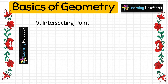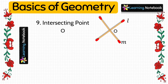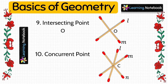Next we have intersecting point, which we just learnt while understanding intersecting lines, so here O is the intersecting point. We also have concurrent point, which we understood while learning about concurrent lines, so here C is the concurrent point.